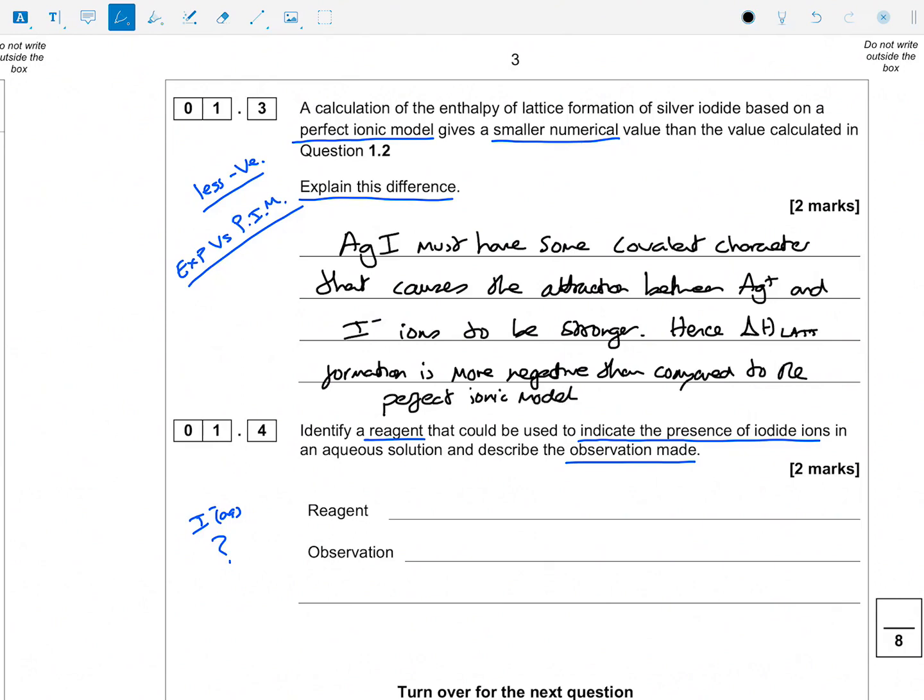is more negative compared to the perfect ionic model. Okay, so that term there, covalent character, they're going to be looking for that, I reckon, in the mark scheme because everywhere you go, everything you read about comparing perfect ionic model to stuff, they talk about that. So that's got to be in there.